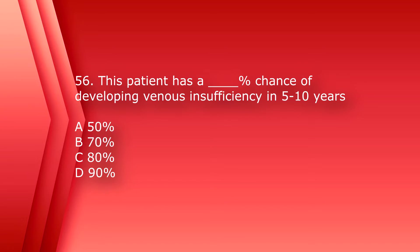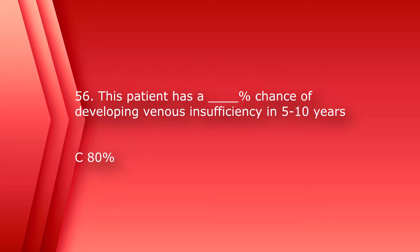Number 56: This patient with the DVT has a blank percent chance of developing venous insufficiency in five to ten years. A) 50 percent, B) 70 percent, C) 80 percent, or D) 90 percent. The answer is C, 80 percent.